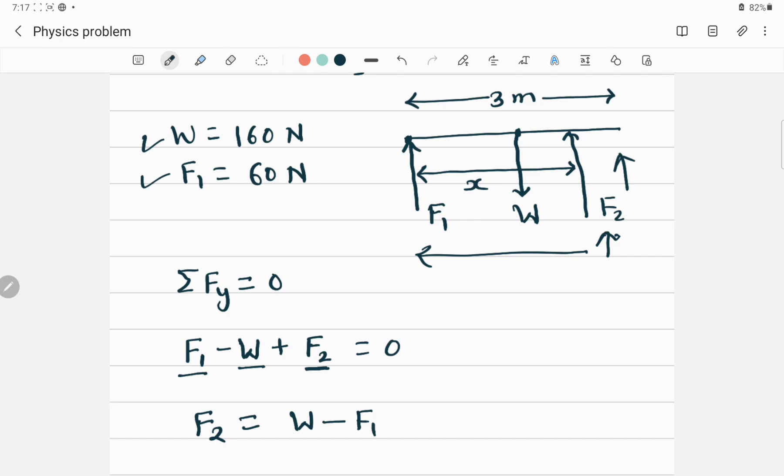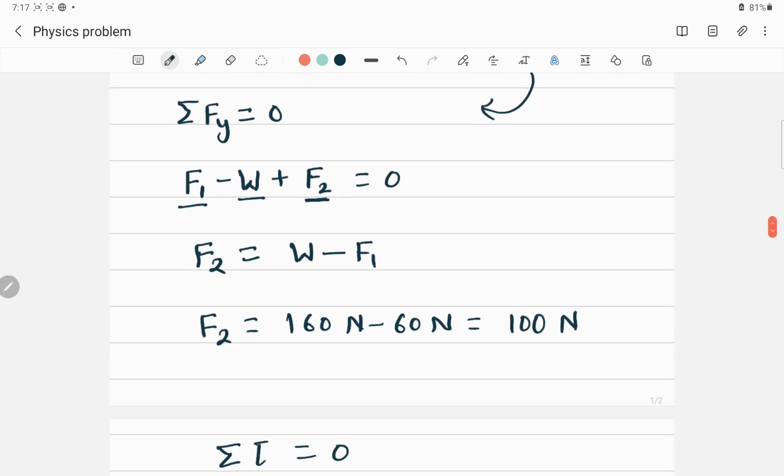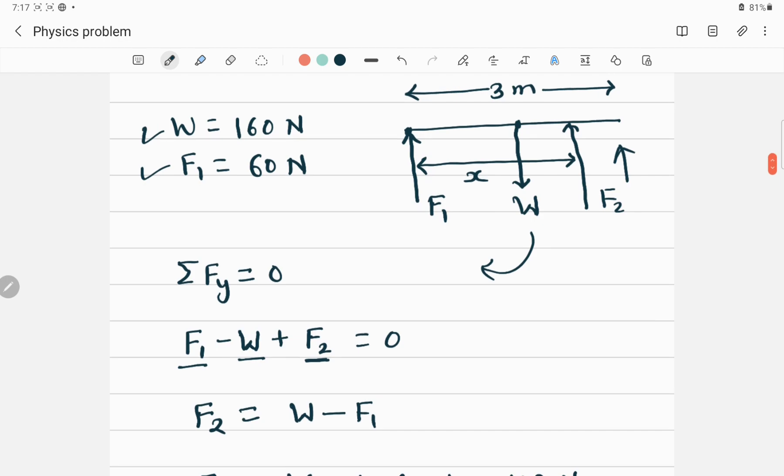The torque produced by this force will be downward, which is in clockwise. This weight is trying to rotate this wooden board in this direction, which is clockwise. That is negative. So I can write down negative W multiplied by R. Let's say this distance is R.